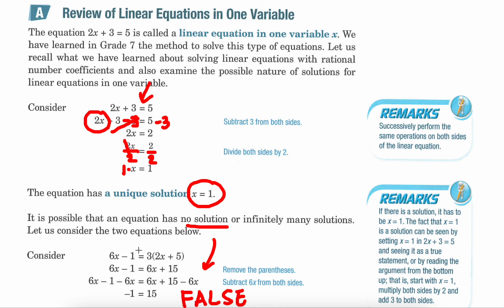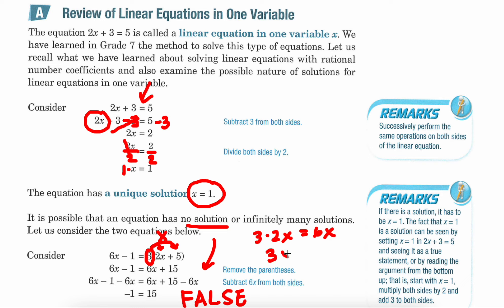6x minus 1 equals 3 times the quantity of 2x plus 5. Here I see that there's a 3 on the outside of the parentheses, so I know I can distribute that 3 by multiplication to everybody inside. So I end up with 6x minus 1 on the left-hand side because nothing changed, and then 3 times 2x is 6x, and 3 times positive 5 is positive 15.